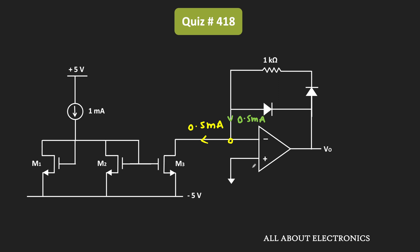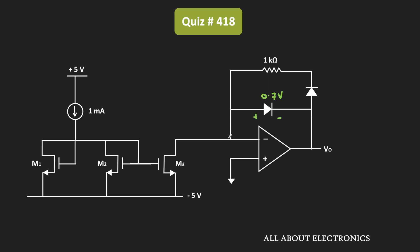Since the non-inverting terminal of the op-amp is connected to ground, due to virtual ground this node will also be at ground potential — that is, 0V. To find the output voltage, we need to determine which diode is conducting. Let's call them D1 and D2. Assume D1 is conducting — in that case, the voltage drop across it is 0.7V, and since this node is at virtual ground, the output voltage would equal 0.7V.